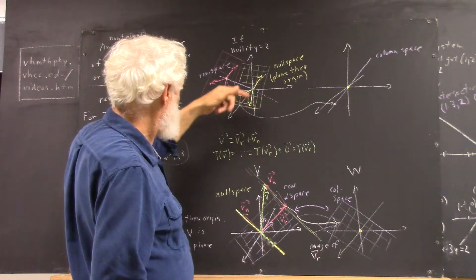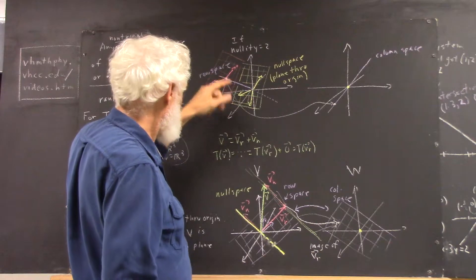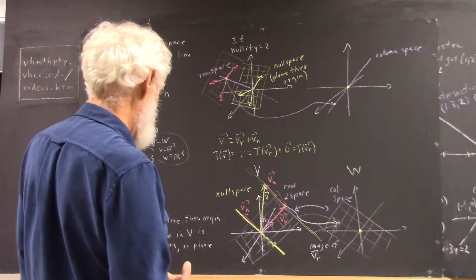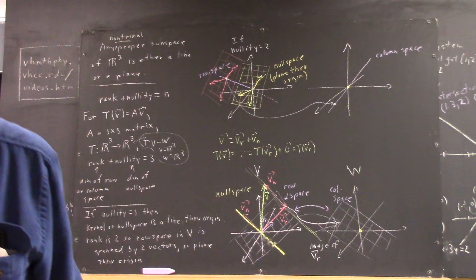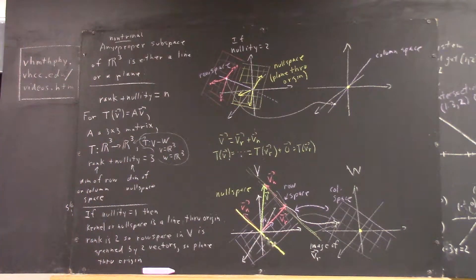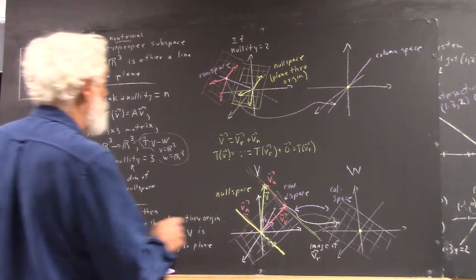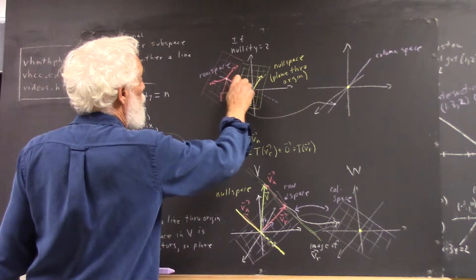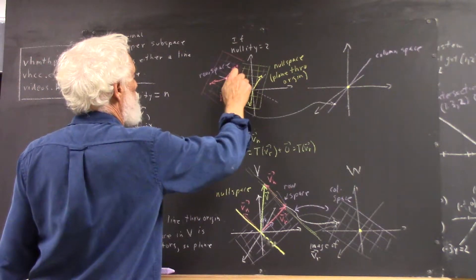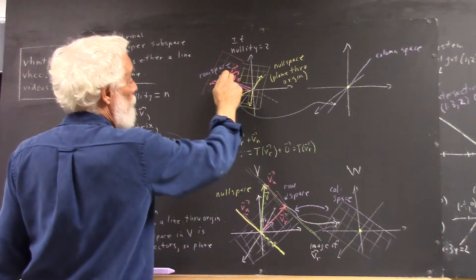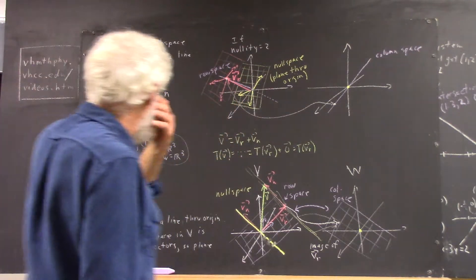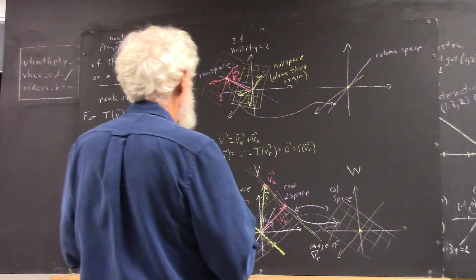and I could draw that. I've got a little nub of red chalk here. Okay, so I've got a Vr here, and that Vr maps to here. So here's the image of Vr.